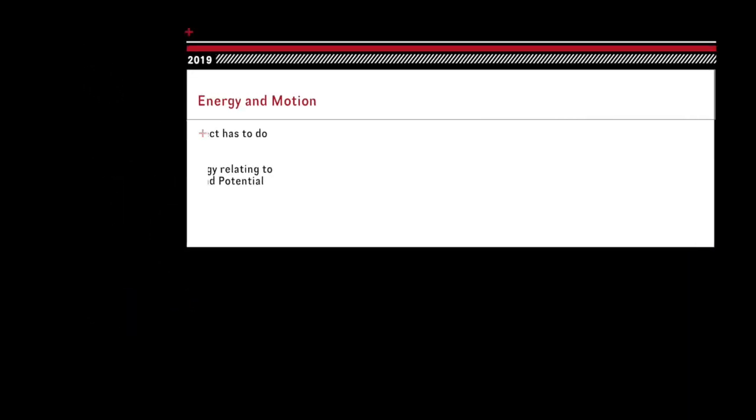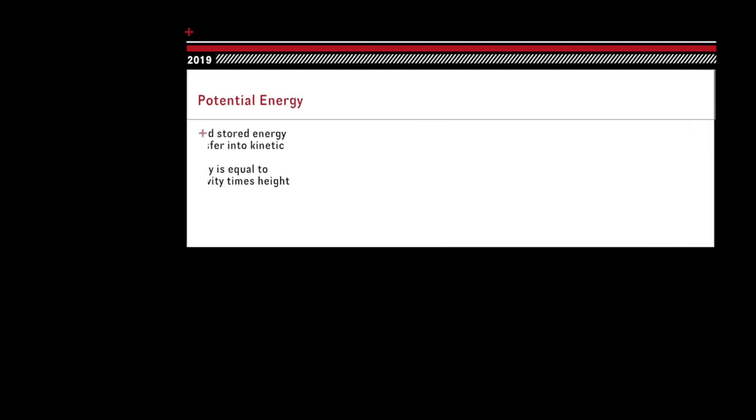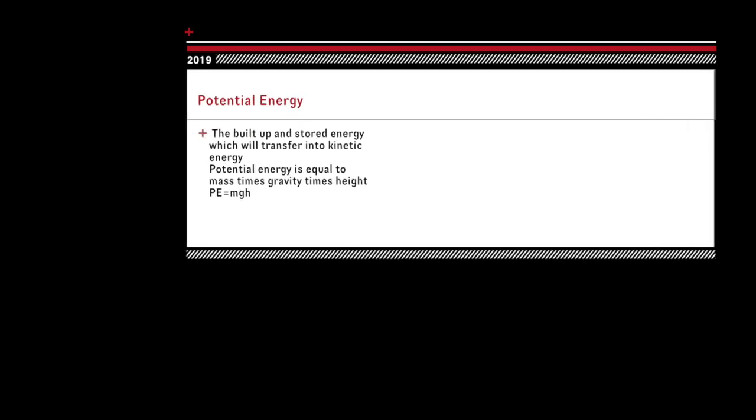Energy is the ability an object has to do work or change. There are two types of energy relating to motion, kinetic and potential energy. Potential energy is the built up and stored energy which will later be transformed into kinetic energy.